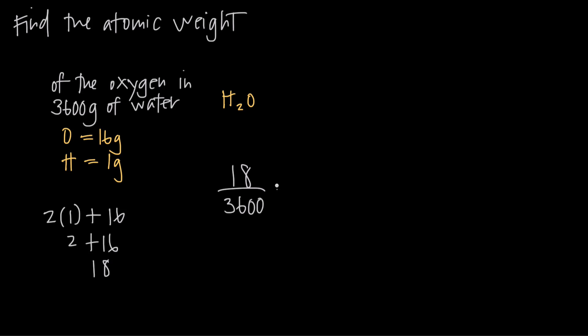So what I'm going to do is set this ratio equal to another ratio. I'm looking for the total weight of the oxygen in 3,600. So I have one molecule and the total. Over here on the right, I need to have one molecule in the numerator, total in the denominator, so that it matches this form here.